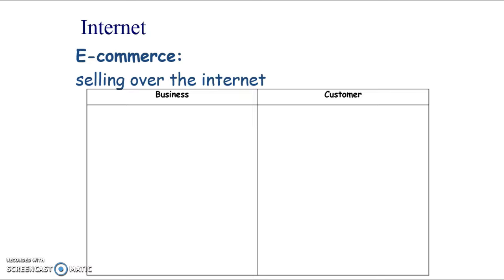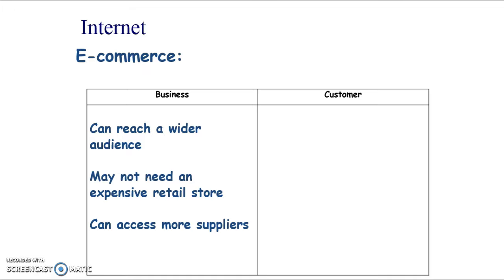E-commerce is a slightly old term these days, but it essentially means doing business over the internet — 'e' for internet, 'commerce' for business. This includes buying and selling online or performing any business function over the internet. Benefits for businesses include reaching a wider audience for more sales and revenue, and not needing an expensive retail store. Retail stores in town centres come with high rent, shop design costs, fixtures and fittings, and staff costs.